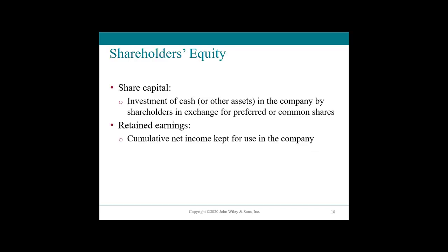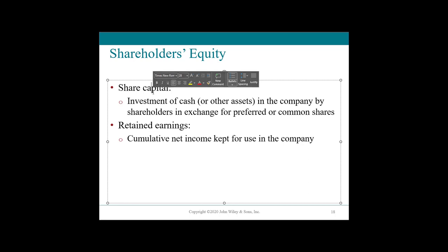Our shareholders' equity is our last part. As we talked about last week, shareholders' equity contains our share capital and our retained earnings. We typically put share capital first — common shares, then preferred shares — followed by retained earnings: the total net income, net of dividends, retained within the company from its beginning until the balance sheet date.